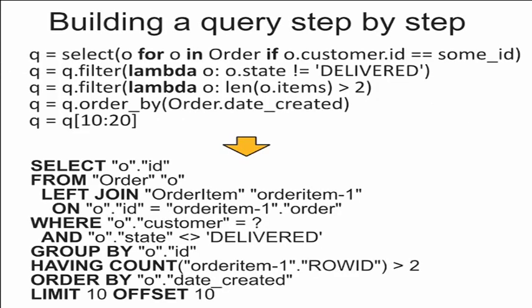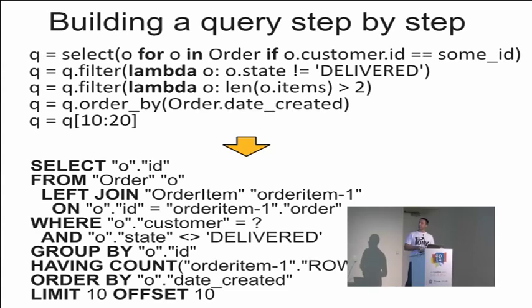With other mappers you can build queries step by step — how is this possible using generators? Pony also allows building queries step by step, adding conditions one after another. This is done with the help of the filter function, which receives a lambda expression as a parameter and returns a new query object with the applied condition. In this example we add a couple of conditions, then order the result and slice it.